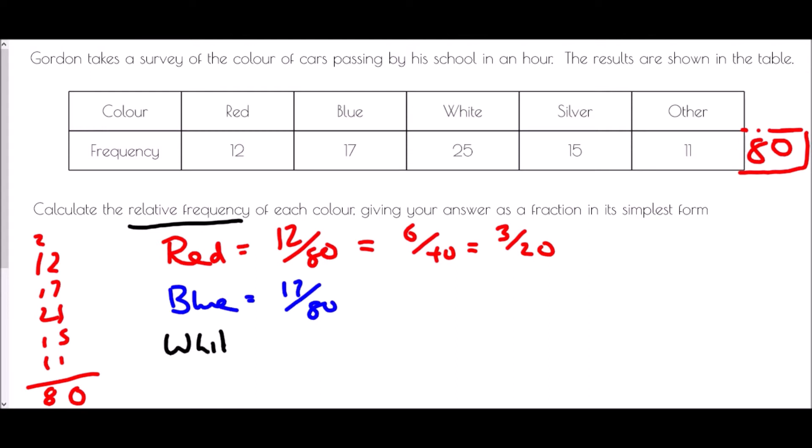The white cars, well we have 25 of those out of 80 in total. If I divide both of those by 5, I'm going to get 5 over 16.